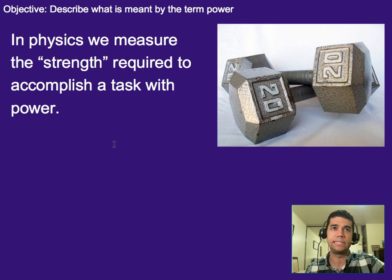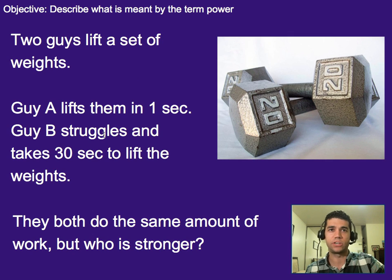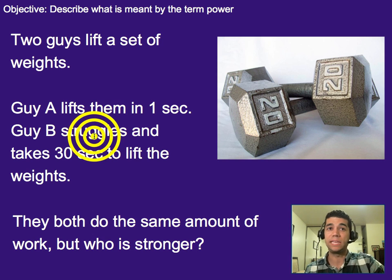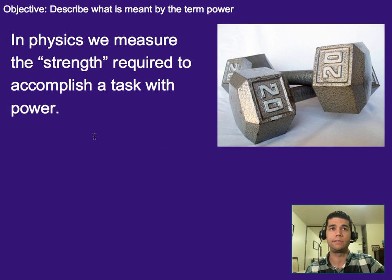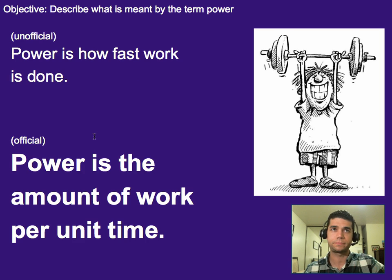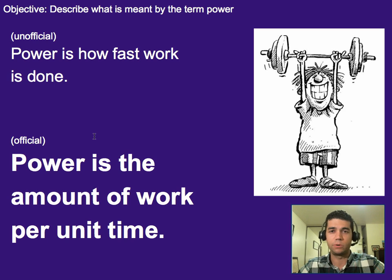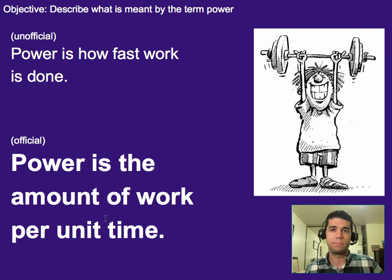In physics, we think of this idea of strength required to accomplish a task as the amount of power. The power required for how Guy B lifted it is different than the power required for how Guy A lifted it. So this idea of strength to accomplish a task is called power in physics. The unofficial definition of power is how fast work is done. The more official way to say it is power is the amount of work per unit time — essentially the rate at which things happen, which is usually a time rate.